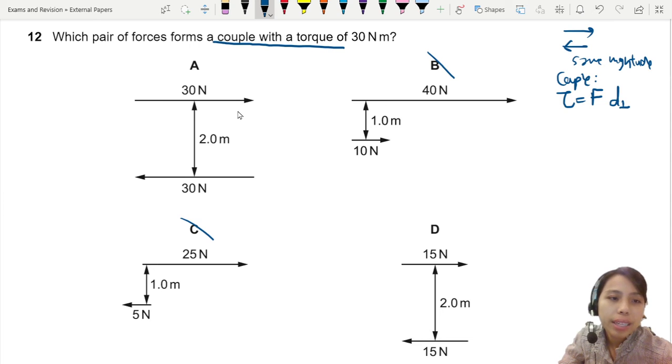So the first one we can calculate for A. Just take 30 times 2. No need to find pivot point or that because it's couple. So this one is 60 Nm. Oh, too big. Wrong now.